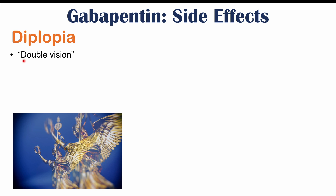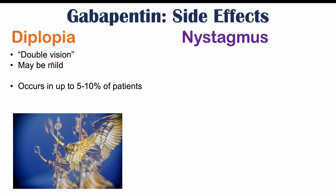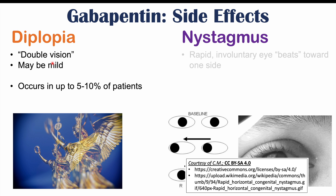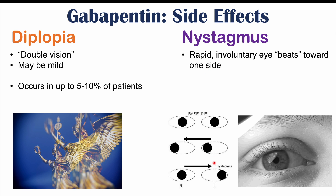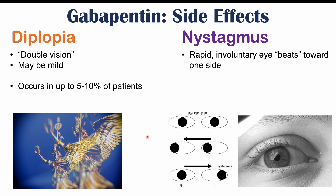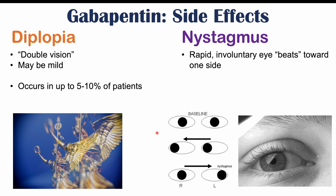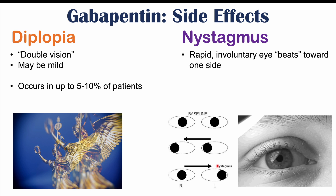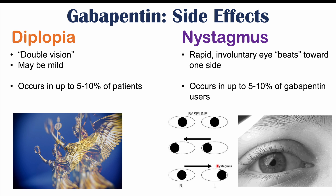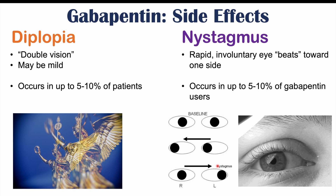Diplopia, or double vision, is another side effect. It is often mild and may be only temporary, occurring in up to 5 to 10% of patients. Nystagmus — rapid involuntary eye beats toward one side — can also occur. If you were to get the patient to follow your finger with their eyes, they may show small jerking movements of the eye in one direction or the other. This also occurs in up to 5 to 10% of gabapentin users.